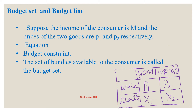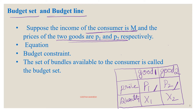Dear students, let us learn what is budget set and budget line. Let us assume the income of the consumer is M, the price of good one is P1, and the price of good two is P2. With a given income and prices, the consumer decides how much of good one (x1) and good two (x2) to buy. His expenditure should always be less than or equal to income, expressed as: P1·x1 + P2·x2 ≤ M.